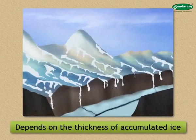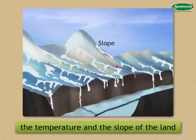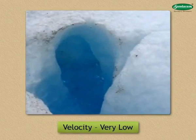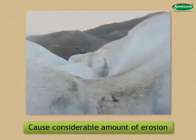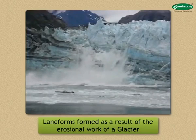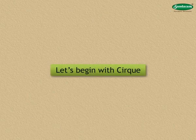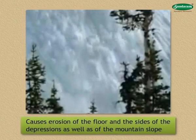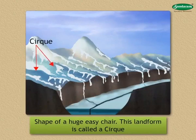The velocity of the glacier depends on the thickness of the accumulated ice, the temperature and the slope of the land. Glaciers also perform the work of erosion, transportation and deposition. Though the velocity of a glacier is very low, the mass of water in solid form is very high, and therefore glaciers cause a considerable amount of erosion. Ice accumulated in the depressions near the base of mountain slopes starts flowing, causing erosion of the floor and sides of the depressions. Over a period of time, such a depression assumes the shape of a huge easy chair. This landform is called a Cirque.